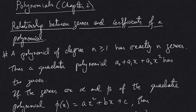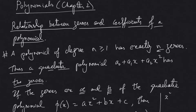A polynomial of degree n greater than or equal to 1 has exactly n zeros. That means a quadratic polynomial, written as a₀ + a₁x + a₂x², has two zeros. If the two zeros are assumed to be alpha and beta, the quadratic polynomial p(x) = ax² + bx + c is the standard way of writing a quadratic polynomial.